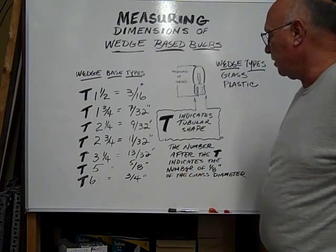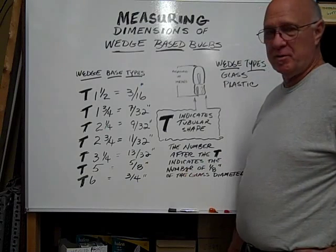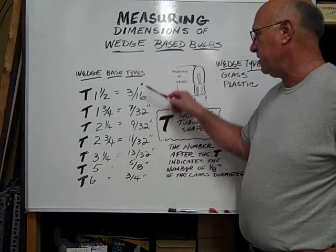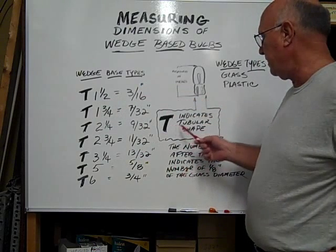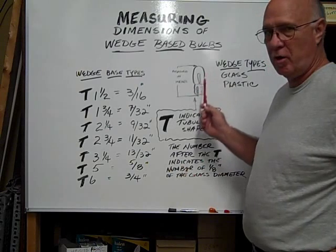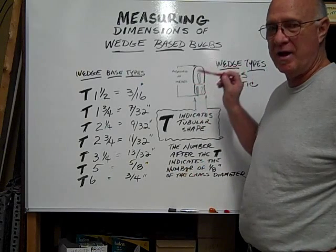Glass wedge-based bulbs are indicated by a T number. You'll see the different sizes here. The T actually determines that it is a tubular-shaped bulb, flat on the sides and usually round on the top.